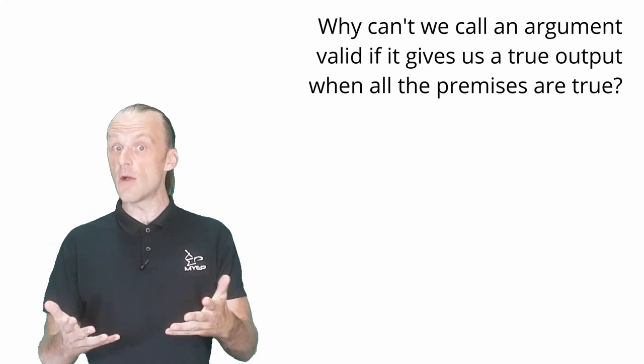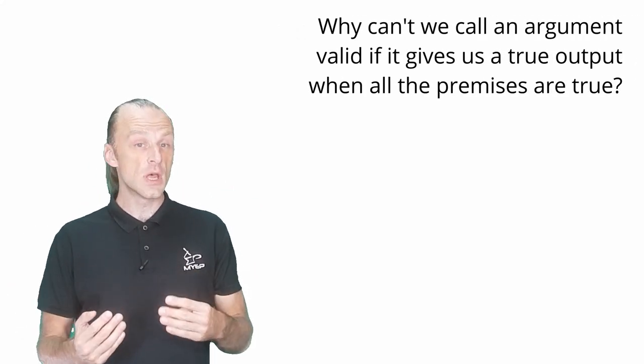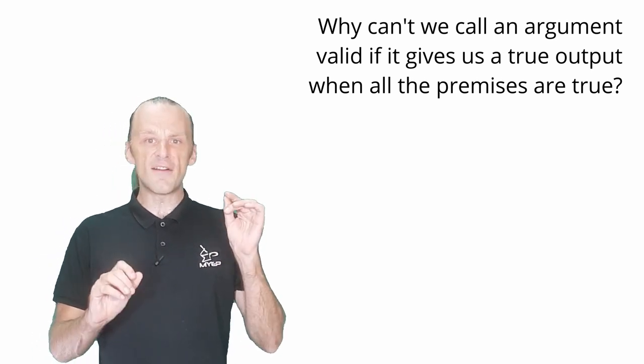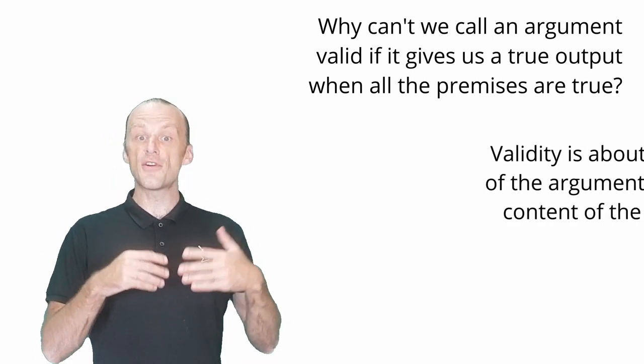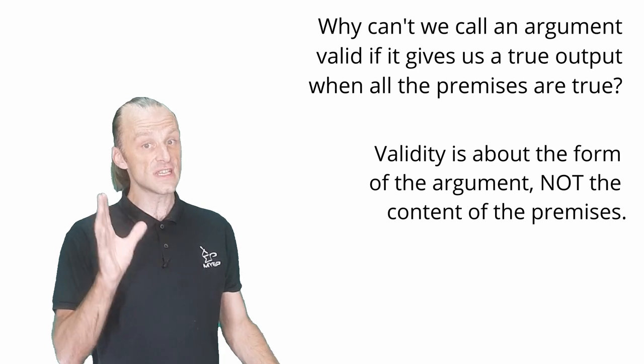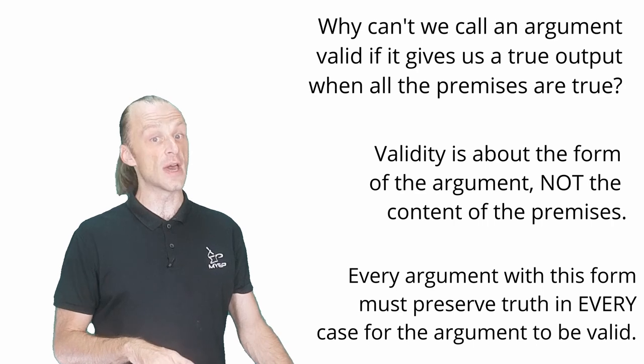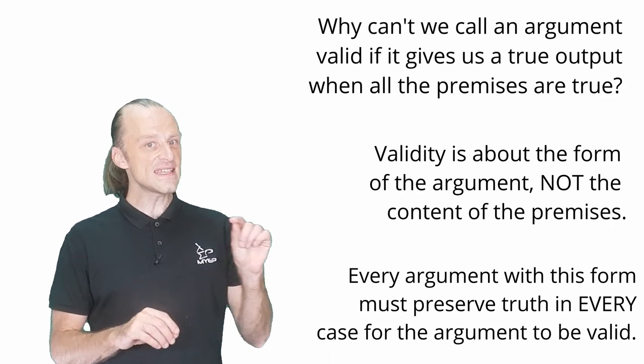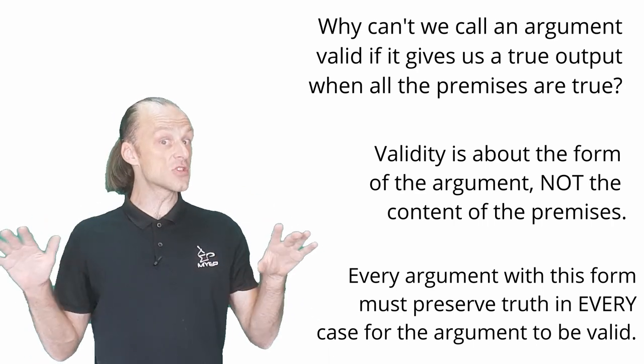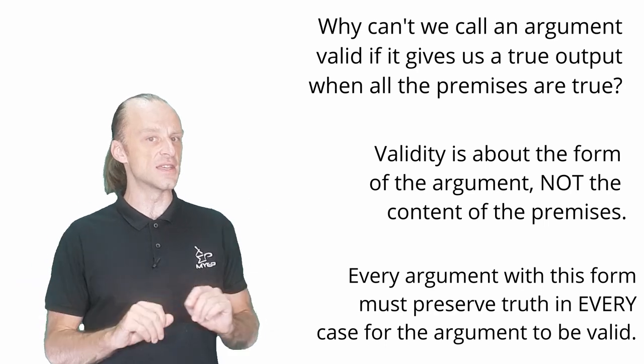Why can't we say an argument is valid if it just gives us a true output from true inputs? Remember, when we talk about validity, we talk about the form of an argument, not its content. There must be no possible way for the premises to be true and the conclusion false, and this has to be true for all possible arguments that take this form.